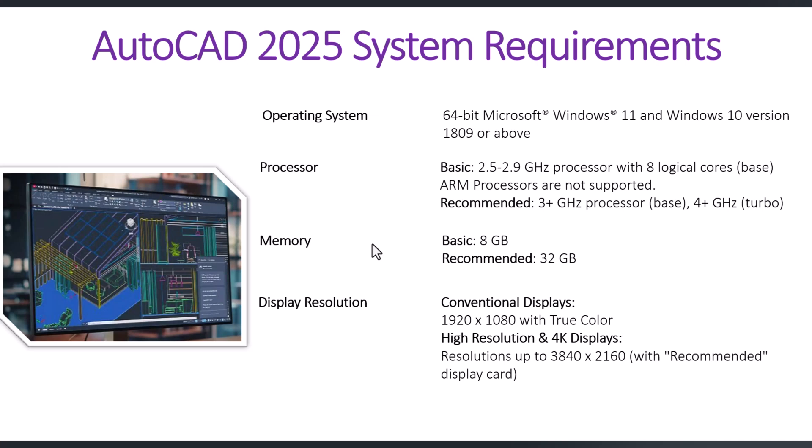First, for running AutoCAD smoothly, your laptop or desktop should have Windows 10 or 11. For the processor, the basic recommendation is 2.5 GHz, but if you have a 3 GHz processor, AutoCAD will run very smoothly, especially when you have a large project or a 3D model to work with.